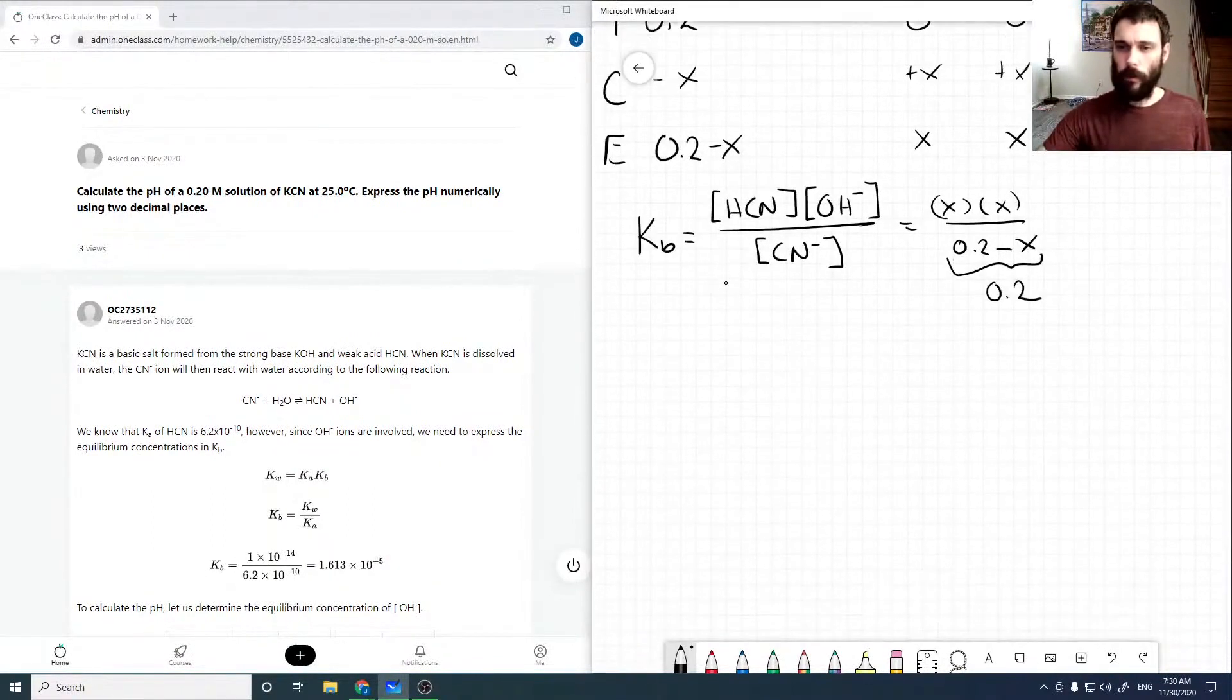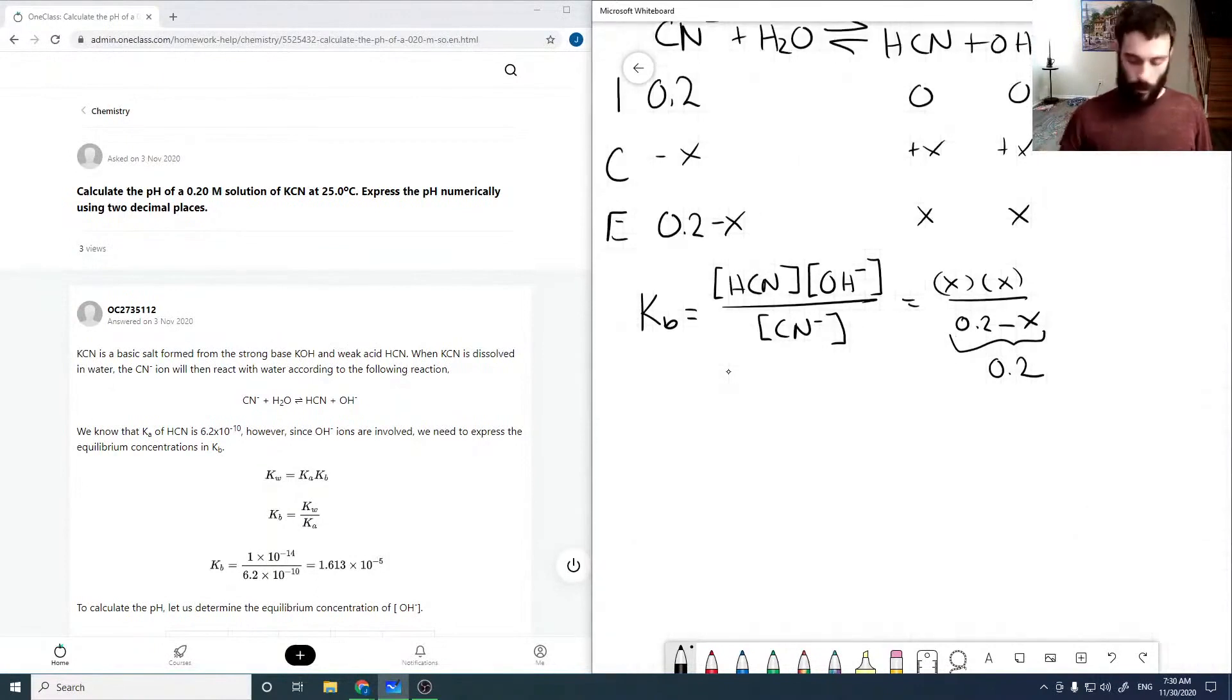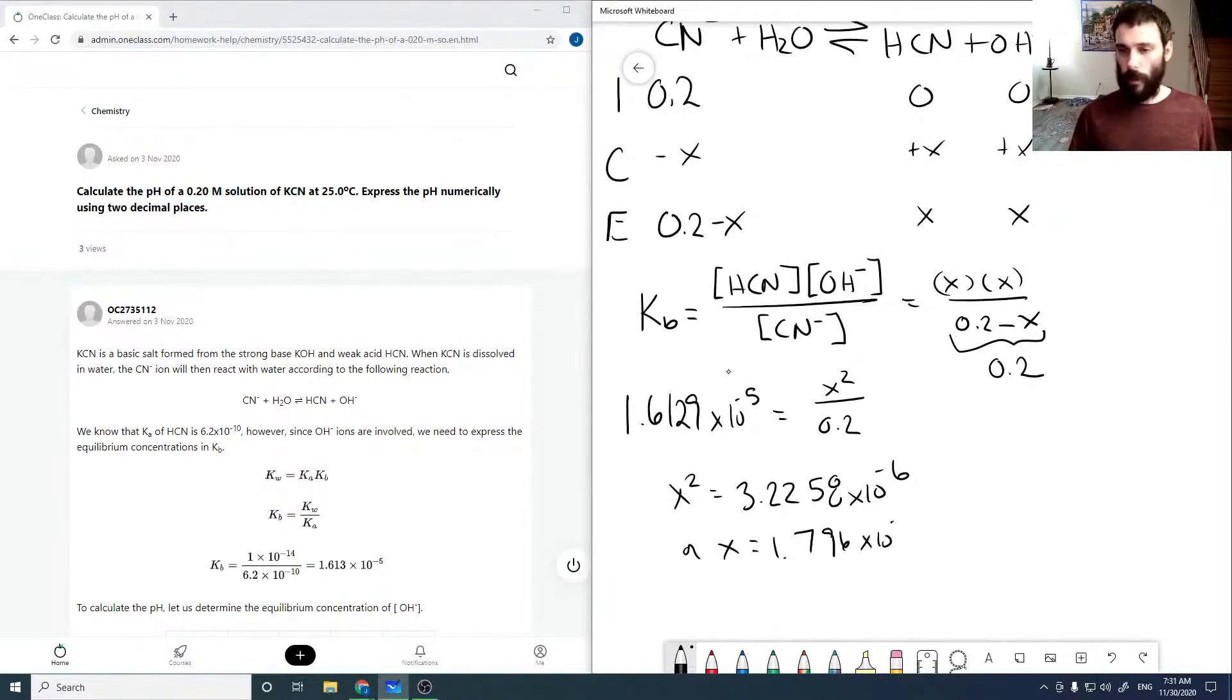Putting in our values, we have 1.6129 times 10 to the minus 5 equals x squared over 0.2. Multiplying by 0.2, we get 3.2258 times 10 to the minus 6, or x equals 1.796 times 10 to the minus 3 molar.